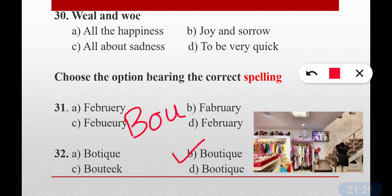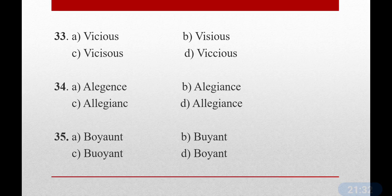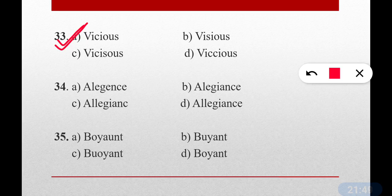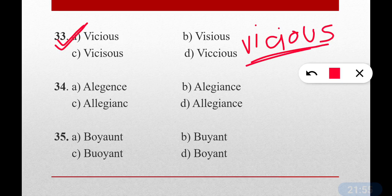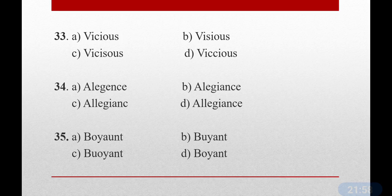Question number thirty-three: Vicious — meaning cruel. The correct spelling is option A — V-I-C-I-O-U-S. Very simple: V-I-C-I-O-U-S. If you find spellings hard to learn, don't just read — write each word 10 to 15 times. Repeat it. Once it's fixed on your tongue, you won't forget it. Like lieutenant — L-I-E-U-T-E-N-A-N-T — you need to read it that way.